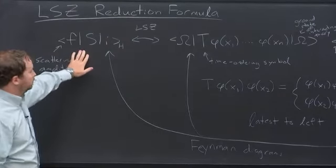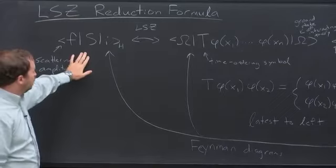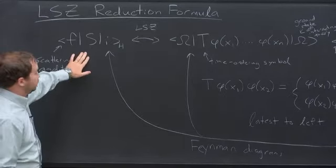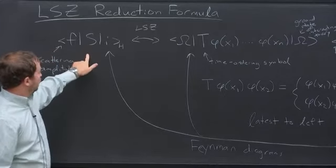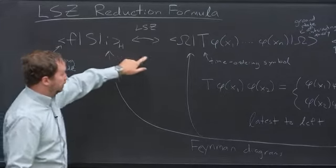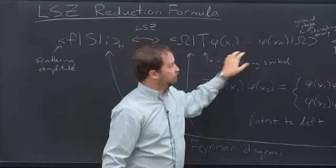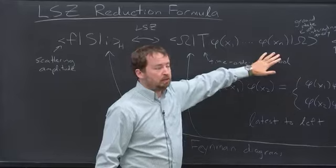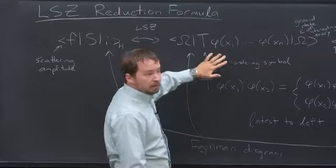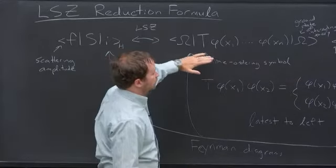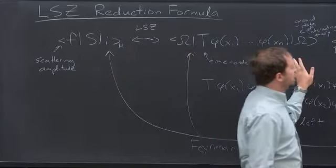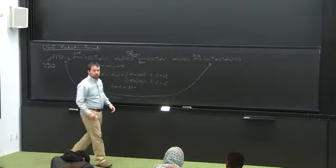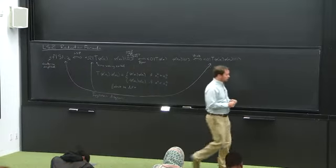Before we start our discussion of the LSZ reduction formula, I want to say a few more words about the free theory. Last time we discussed the vacuum state of the free theory; I just want to briefly say a few words about the states of particles and the Heisenberg picture. As you might expect, we're working in the Heisenberg picture, and all of these x's are four-vectors.